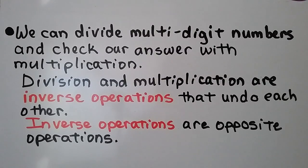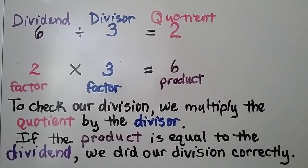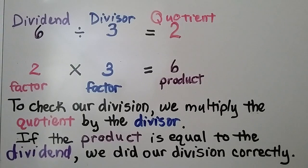We can divide multi-digit numbers and check our answer with multiplication. Division and multiplication are inverse operations that undo each other — inverse operations are opposite operations. Here we have 6 divided by 3 is equal to 2. 6 is our dividend, 3 is our divisor, and 2 is our quotient.